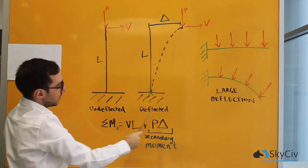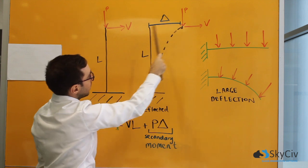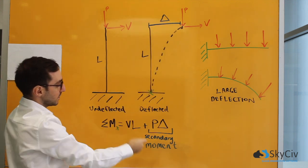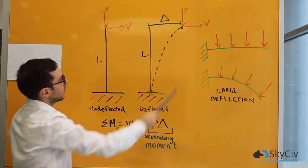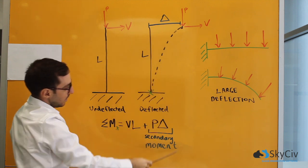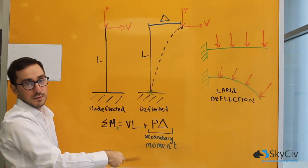Then we have the secondary moment which is caused by the gravity load and the deflection. The axial load plus the deflection gives us this secondary moment. That's P multiplied by the distance from the base of the column, delta, and that's our secondary moment. That's called our P-delta effect.